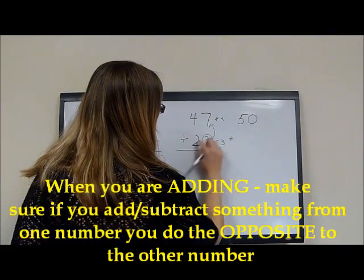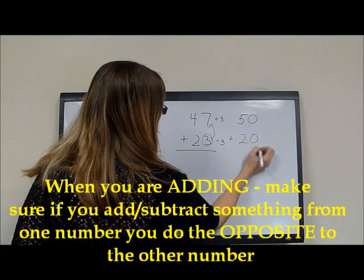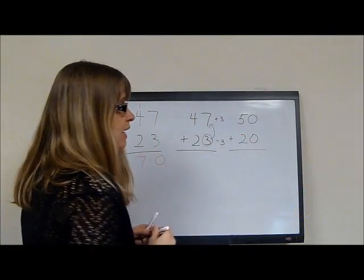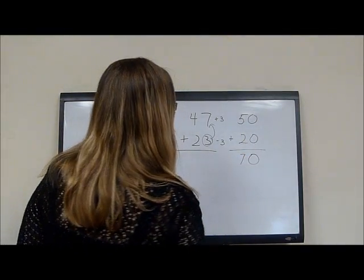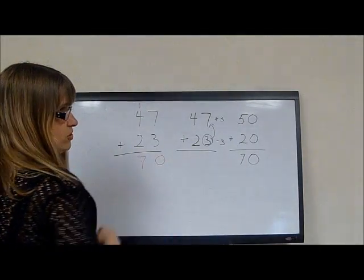So we're going to add 3 to 1 and subtract 3 from the bottom. Now when we subtract 3 from the bottom, that gets us 20. Now we can do 50 plus 20 gives us 70. Yeah, we are both getting the same answer.